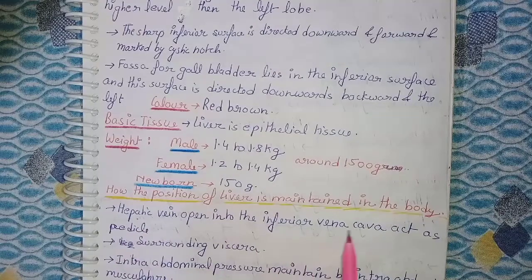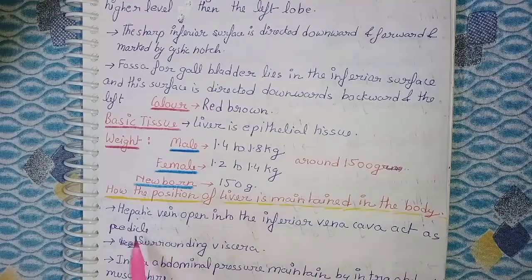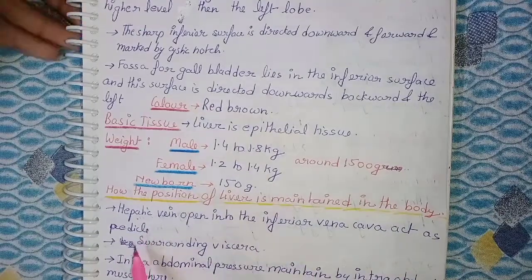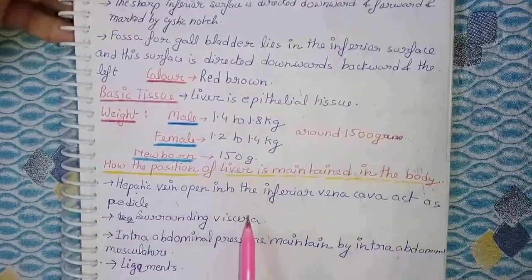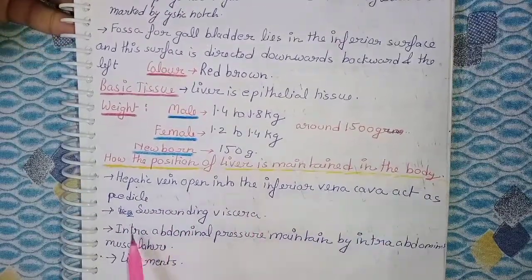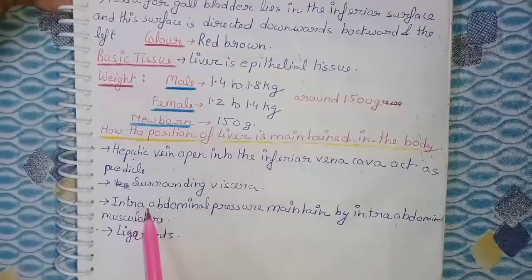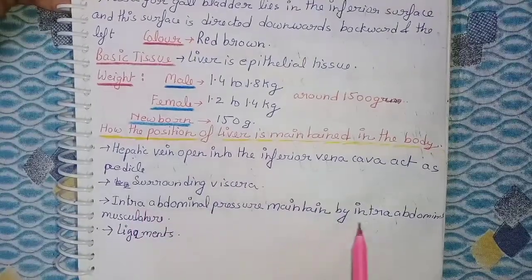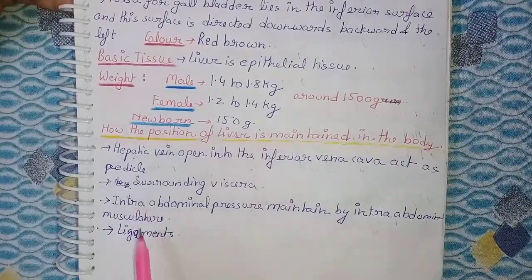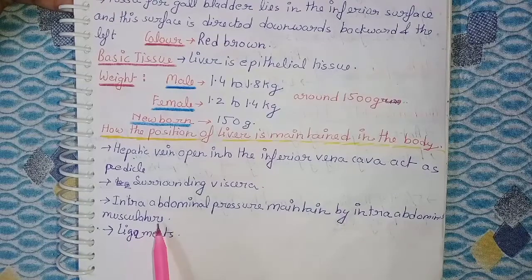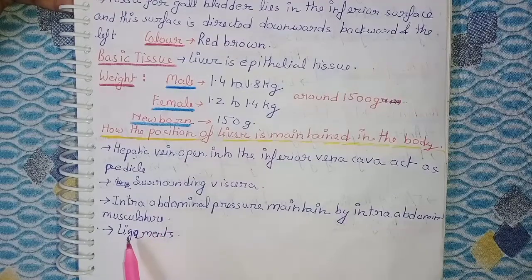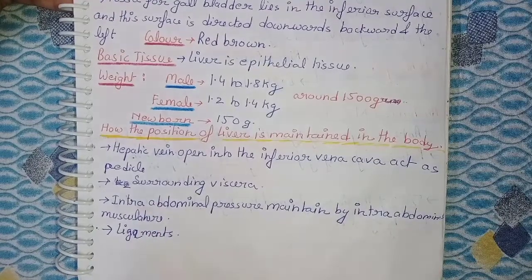How is the position of the liver maintained in the human body? The hepatic vein opens into the inferior vena cava and acts as a pedicle. The surrounding viscera help maintain the position of the liver. Intra-abdominal pressure maintained by intra-abdominal musculature, and the ligaments which support the liver, also help maintain its position.